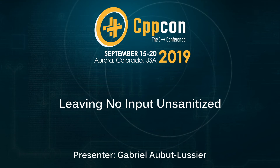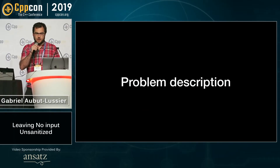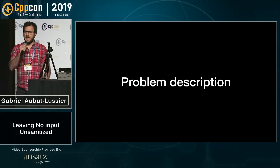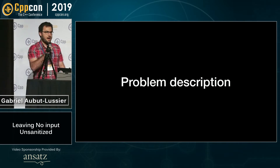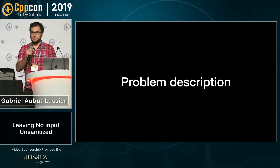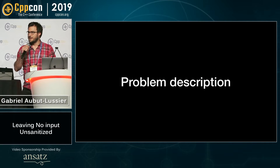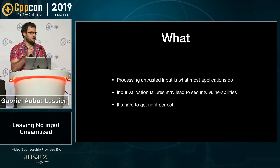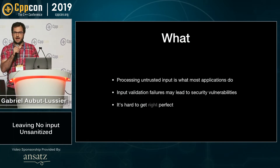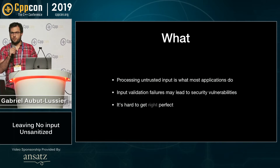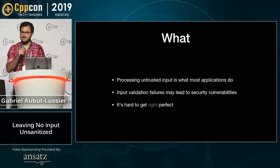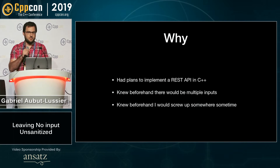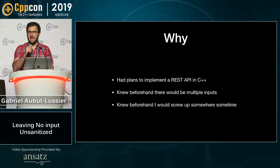Hello everyone. Processing untrusted inputs is something that every application has to do at some point, and it is something that is very hard to get right, if not perfect. Any failure to do it right may lead to security vulnerabilities. When I got tasked with writing a C++ backend that has to serve an HTTP REST API, I figured I'm going to screw up at some point. So I decided to equip myself with the right tools in order to solve this problem without as many pitfalls.